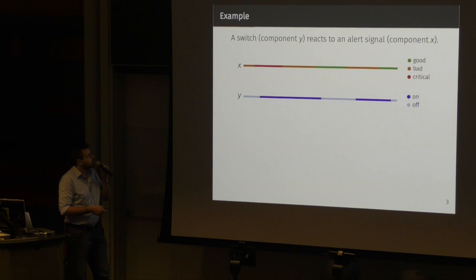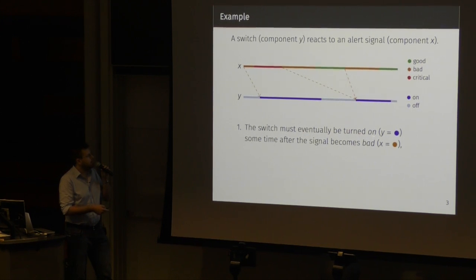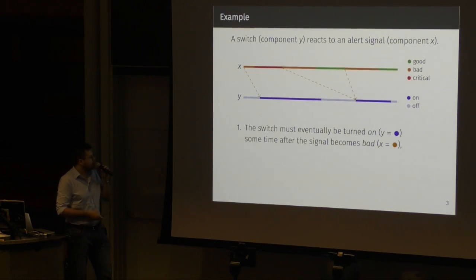These components are described by state variables and the behavior over time of these state variables are the timelines. The timelines describe the evolution over time of the system. And the behavior of these timelines is constrained by a set of temporal constraints that describe the model and the goals and everything. So, just to have a little example, we have these two components. A system with a switch, a normal switch, that has to react to the signal.